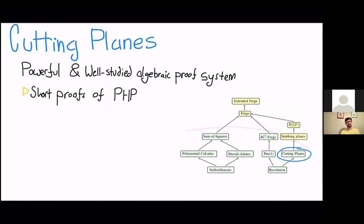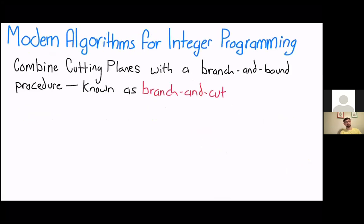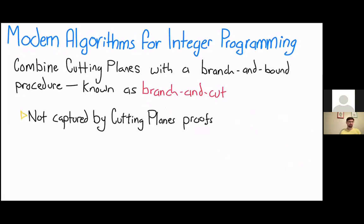In proof complexity, cutting planes is quite a powerful and very well-studied proof system. There are short proofs of the pigeonhole principle in cutting planes, which is a standard hard family of formulas for many of the proof systems we study. Exponential lower bounds were proved on cutting planes in the 90s by Pavel Pudlák. Although cutting planes is very well-studied in proof complexity, in modern integer programming it's not really used on its own. Modern integer programming algorithms combine cutting planes with a branch-and-bound procedure, resulting in a class of algorithms known as branch and cut — and these are not captured by cutting planes.